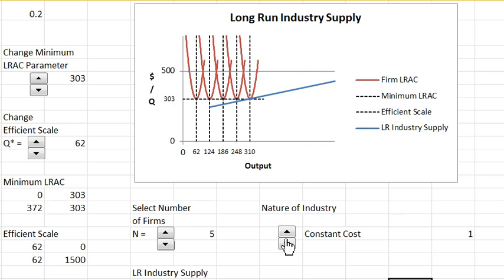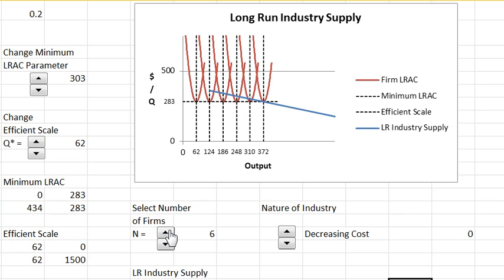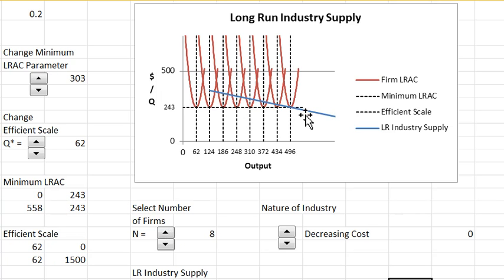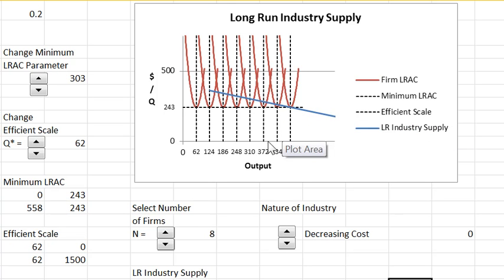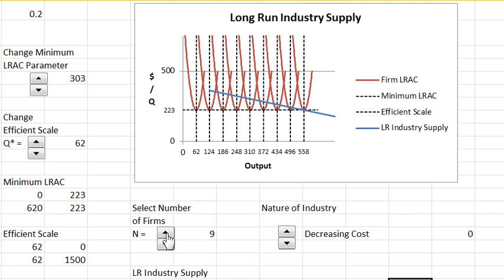And now instead of going from increasing cost, let's look at a decreasing cost industry which is also possible. This means actually that some factors of production actually get cheaper as the industry gets bigger. Or if you will, it enables a more efficient type of input to be produced at large scale which wasn't available at small scale.